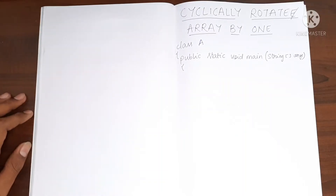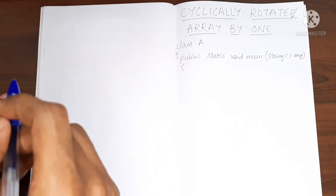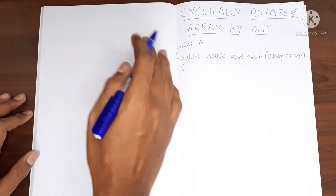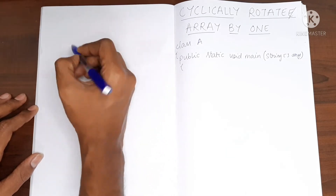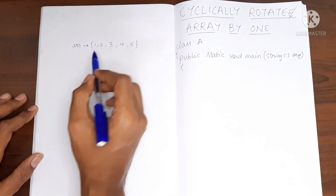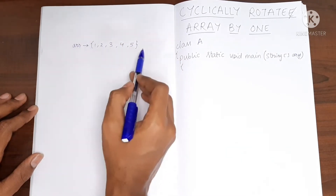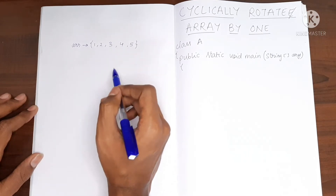Hello, today I'll teach how to cyclically rotate an array by a distance of 1. What do I mean by cyclically rotating an array by a distance of 1? Let's say we have an array with values 1, 2, 3, 4 and 5.